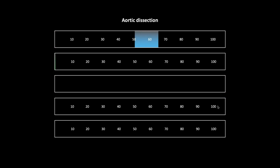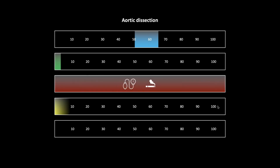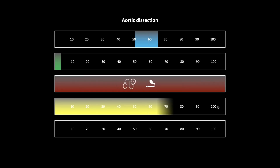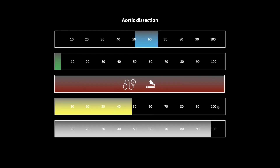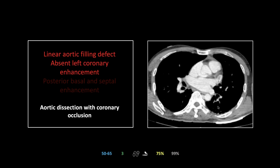Aortic dissection: affects ages 50 to 65, predominantly males, incidence of three per hundred thousand. Risk factors include hypertension and smoking. Mortality is 75 percent in the wild and 48 percent if previously diagnosed — high in either case. CT sensitivity is about 98 percent.